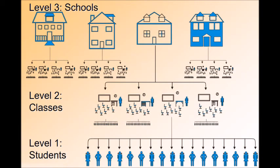Here is another example of three-level modeling, this time in a school scenario. At level 1 there are students, and students are nested within classes. Classes are at level 2 and are nested within schools. Schools are at level 3. This is an example of three-level hierarchical linear modeling.